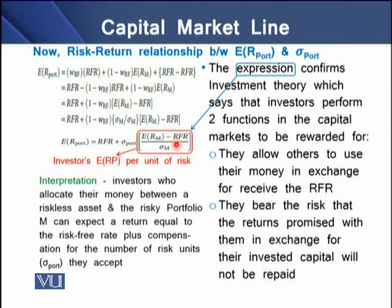This expression confirms investment theory, which says that an investor performs two functions in the capital market for which he expects to be rewarded. First, he lends his money to others in exchange for the risk-free rate. Second, when he invests in risky assets, he bears the risk that the promised returns may not be repaid. So the two rewards are: reward one, the risk-free rate of return, and reward two, the risk premium.